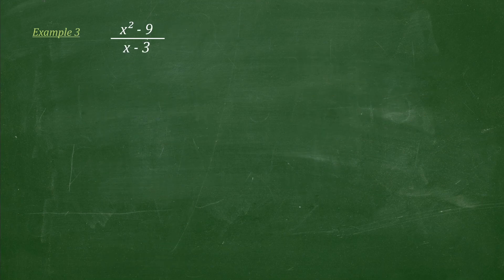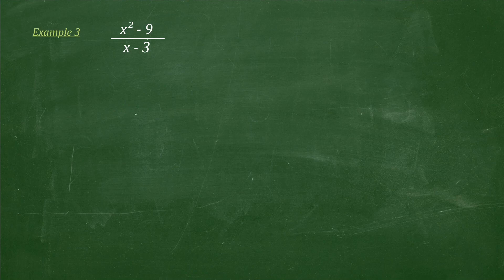Here's a third example. This time, it is very important to note that sometimes there is sort of an incomplete dividend. If we observe the terms of the numerator, we are missing a term with x as the literal coefficient. It is very important that we place 0 as the numerical coefficient of this x as a placeholder for that term. Otherwise, the answer will be incorrect. So let's write the numerical coefficients: we have 1 as the numerical coefficient of x squared, followed by 0 as the numerical coefficient of x, and lastly the constant as negative 9. Then place this inside an inverted division symbol.